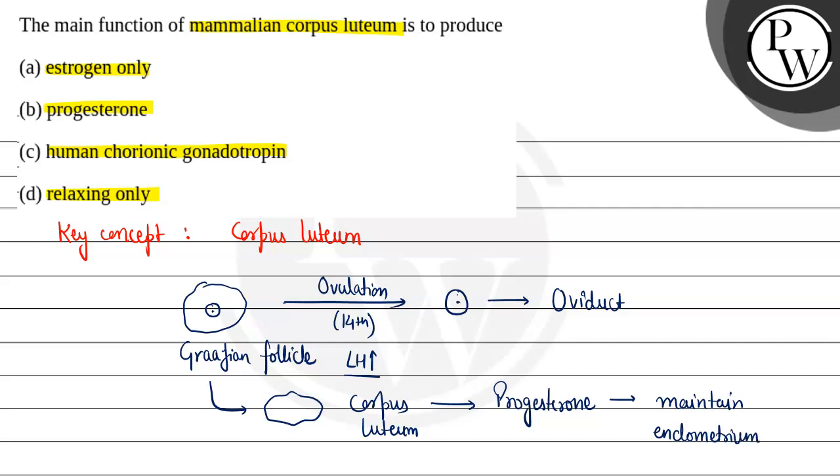So now question me puchha hai, the main function of mammalian corpus luteum is to produce. First option hai estrogen only, toh estrogen ko produce karta hai Graafian follicle. Isliye yeh toh incorrect ho jayega.